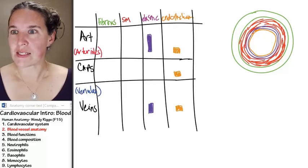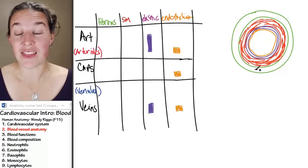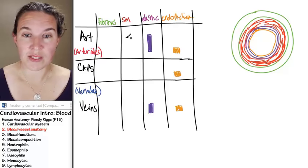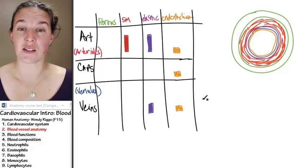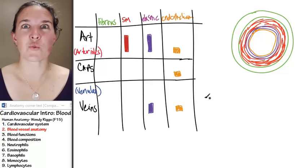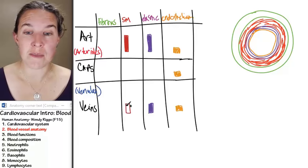Now, arteries are full of smooth muscle. Perhaps I should state that differently. Arteries have a thick layer of smooth muscle. So, let's go ahead and draw that in. Almost like the amount of elastic tissue. This is not accurate. This is relative. So, I'm showing you smooth muscle in relative amounts.